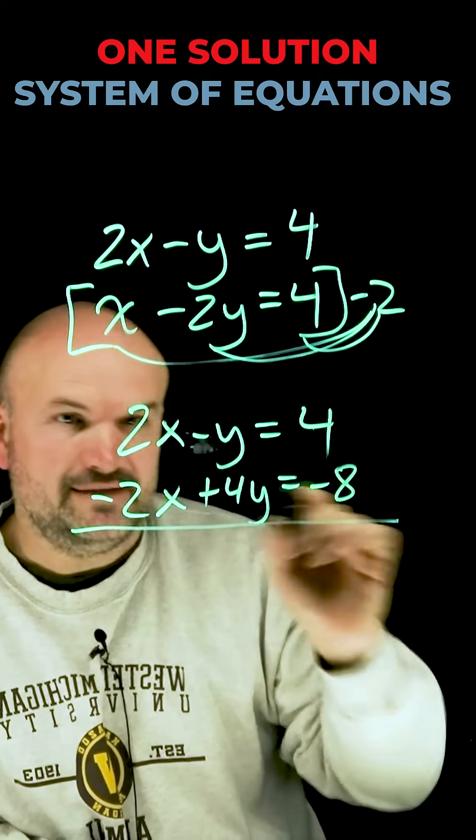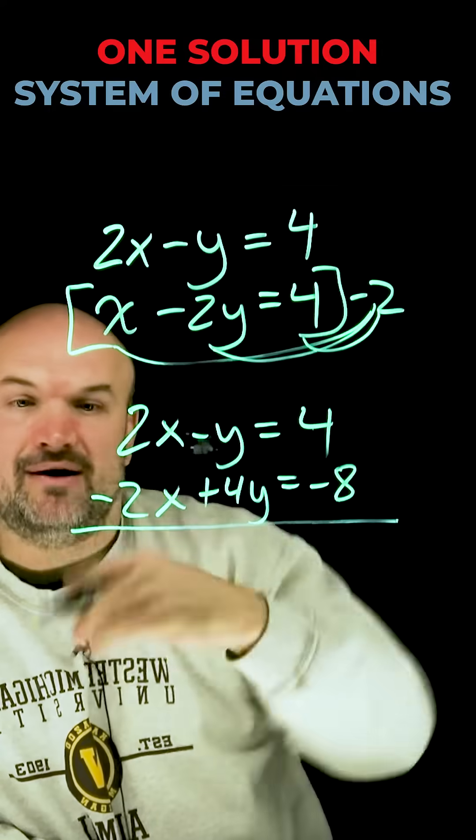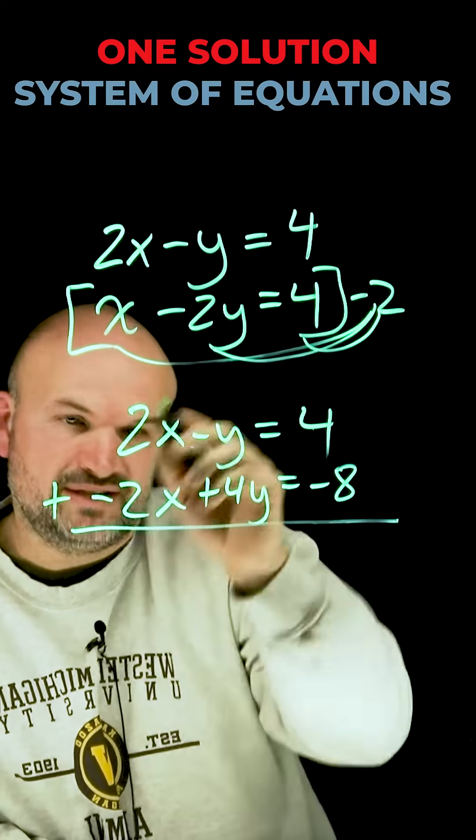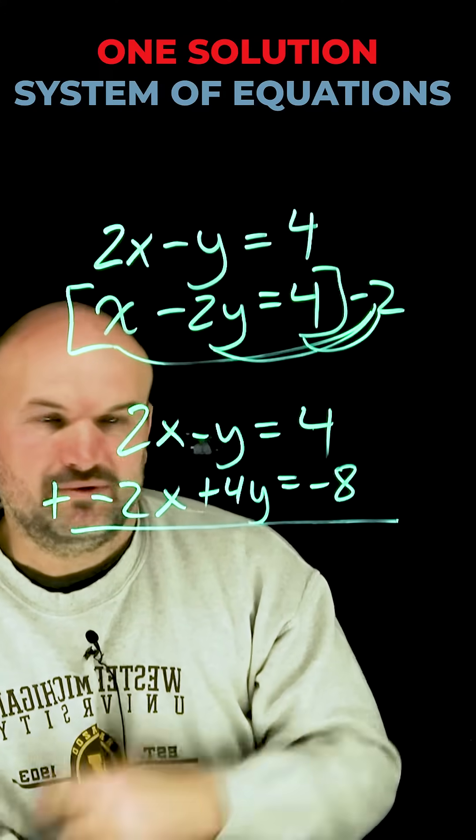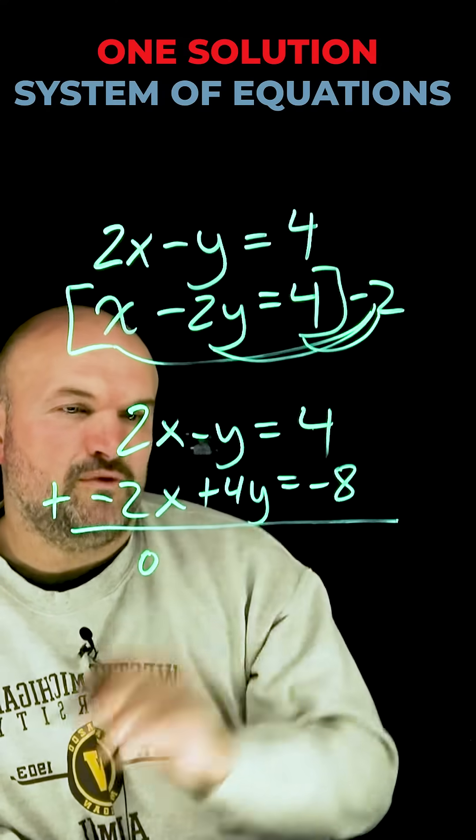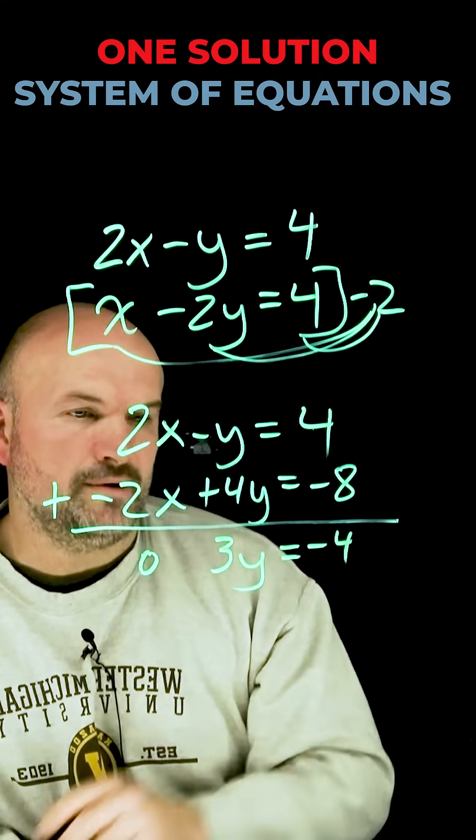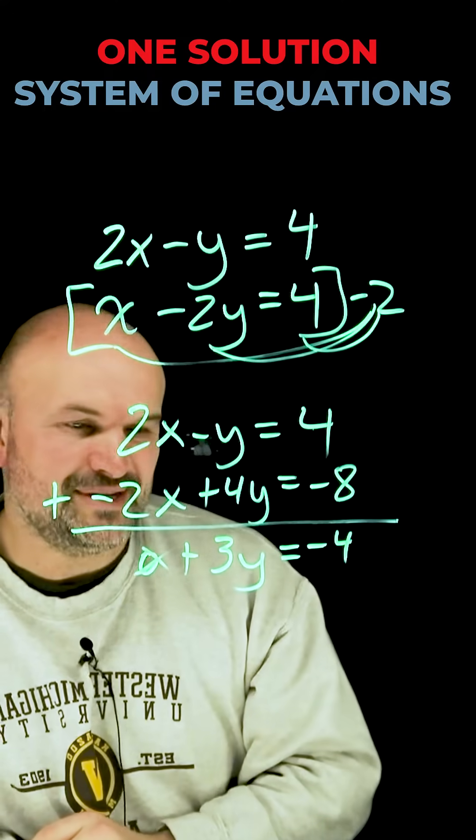So now you can see that I have the exact same coefficient, one positive and one negative. And so now I can add these two equations to eliminate my variable x. Because you can see it's going to be 0x, which we don't really need anymore, right? 0x is just zero. Then I have negative y plus 4y, which is going to be 3y, and that equals negative four. So you can see zero plus 3y, I just don't need that. So we don't need to write it in there.